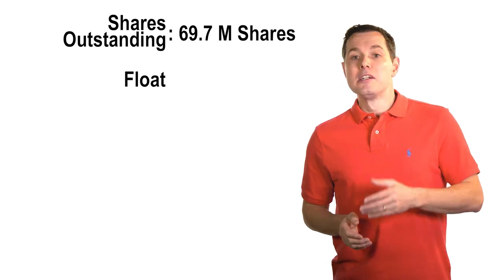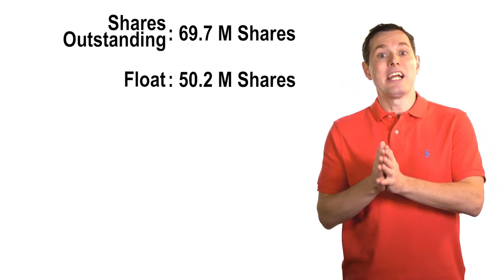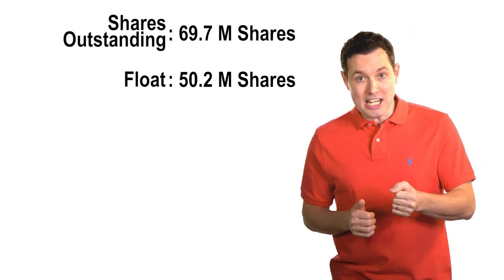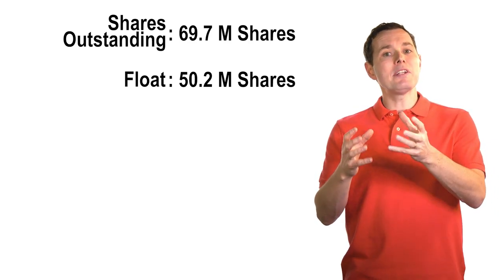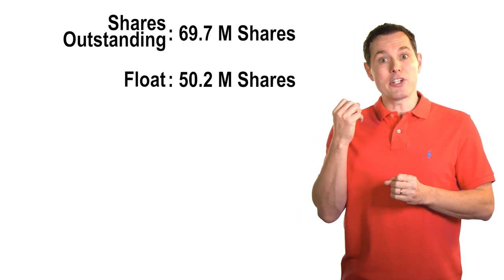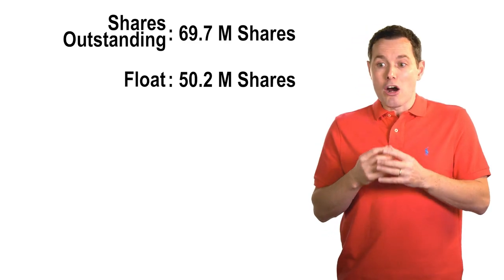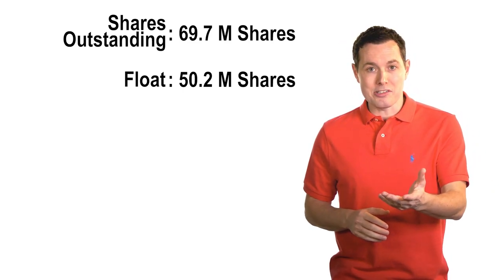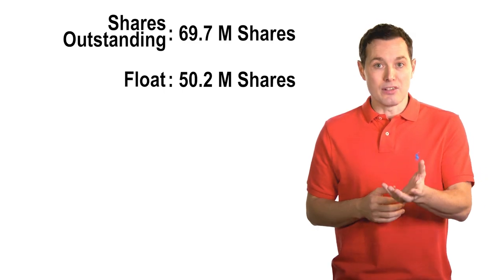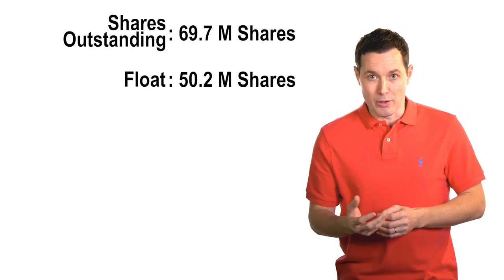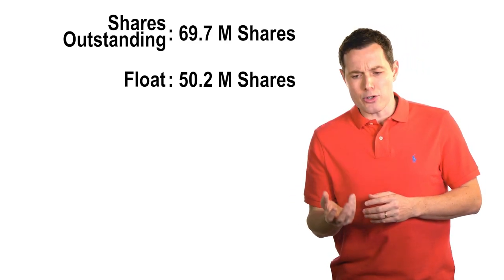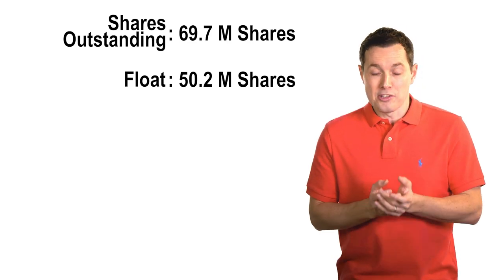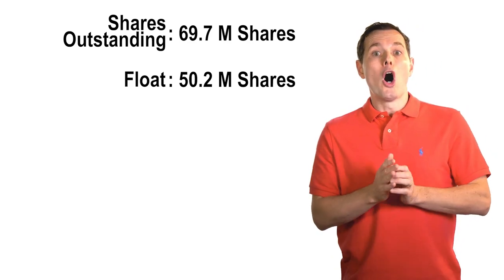Then we have something known as the float. Currently GameStop has about 50 million shares in their float. The difference between shares outstanding and float is: shares outstanding is how many pieces of the pie the company issues; the float is how many of those shares are available to the public. So if insiders owned 20 million shares, those shares would not be counted in the float. Restricted or insider-owned shares are not counted within the float. The float is really what's available to be bought and sold on the stock market.